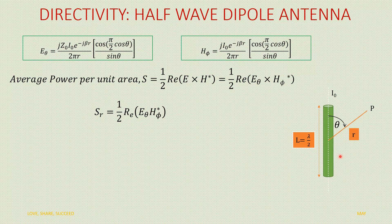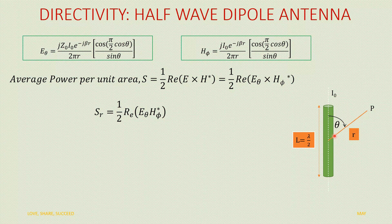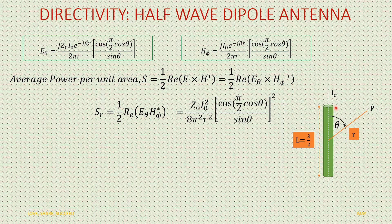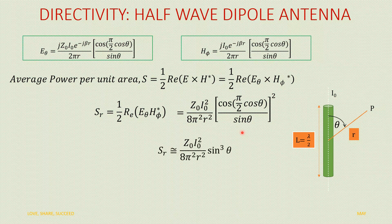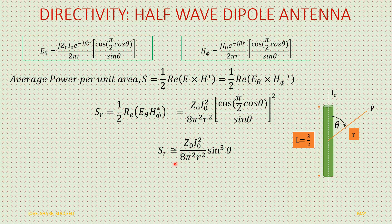Consider the antenna of length lambda by 2 along the z-axis. The point of interest is at distance r. The maximum peak current is I0 and theta is measured from the z-axis. Substituting the values of E_theta and H_phi conjugate, we get S_r equal to Z0*I0² by 8*pi²*r², multiplied by [cos(pi/2 * cos(theta)) / sin(theta)]², which is approximately equal to sin(theta). So radiation density simplifies to Z0*I0² by 8*pi²*r² * sin(theta).